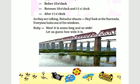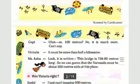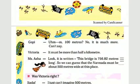The bus crosses the Narmada river. How wide is it? Take out page number 26 and let's guess. Gopi says probably 100 meters, but it is much more. Victoria says it must be more than half a kilometer.